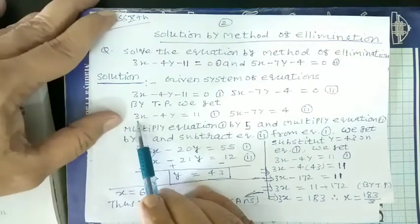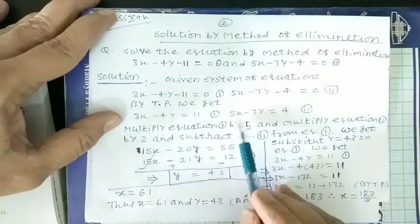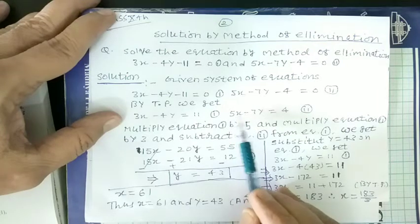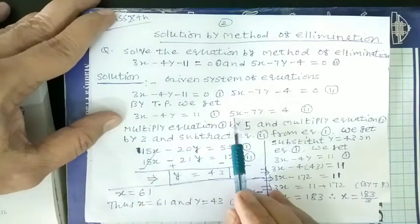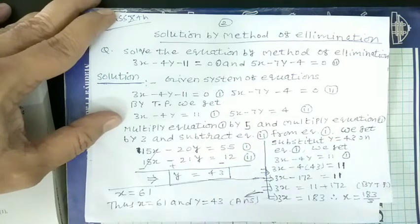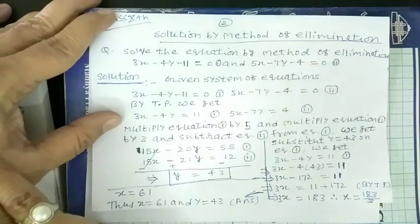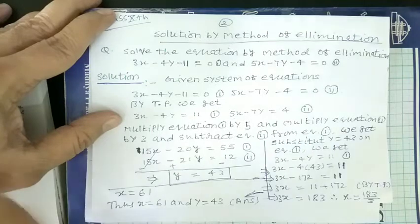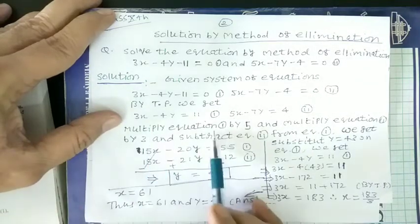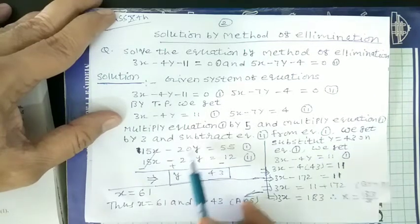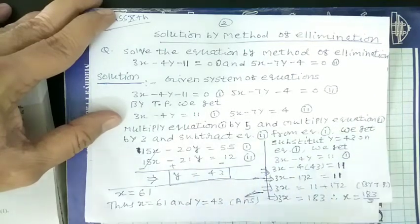We multiply equation 1 by 5, and 5 times 3 becomes 15x. Multiply equation 2 by 3, and 3 times 5 becomes 15x in second equation. And both are same sign. Therefore, if we want to eliminate it, then we take the help of subtraction. If signs are different, then we add for the elimination. So just you see here, multiply equation number 1 by 5 and multiply equation number 2 by 3 and subtract equation 2 from equation 1.